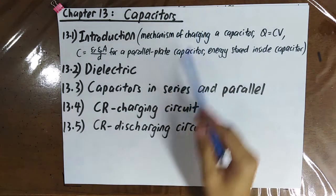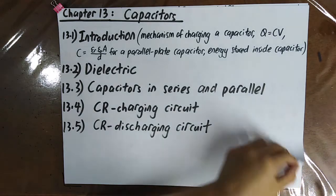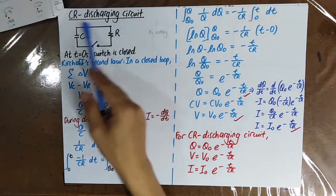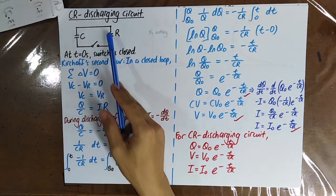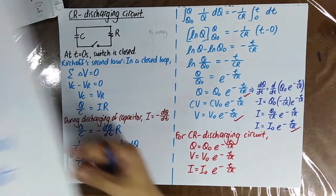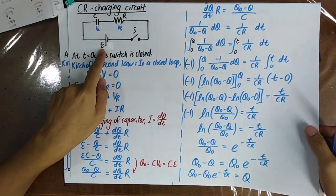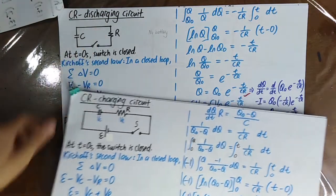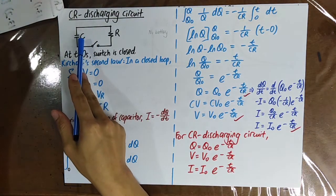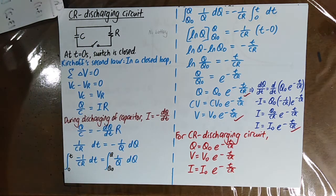In this video, we'll be talking about a CR discharging circuit. A CR discharging circuit is like this. You notice that there is now no more battery, because in the CR charging circuit you have a battery. But now since it's discharging, that means the capacitor is already charged so you don't need a battery anymore.